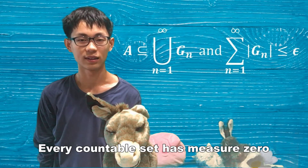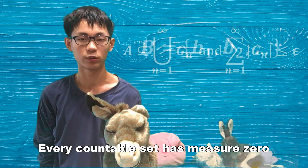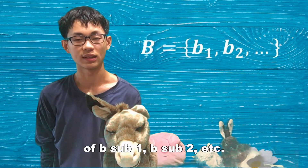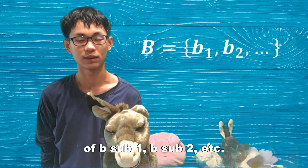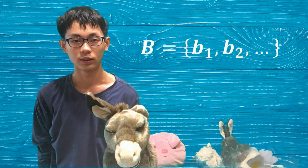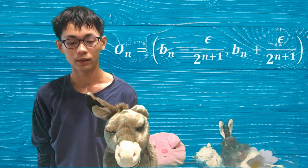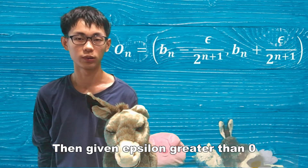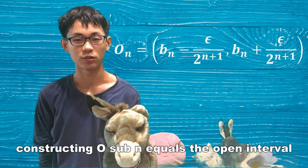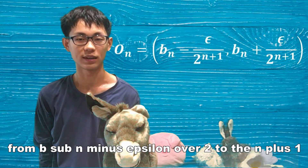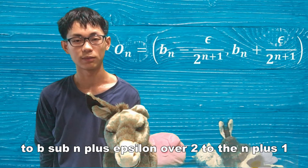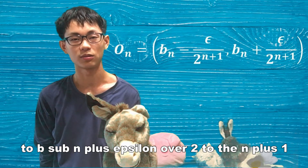Every countable set has measure zero. Let B equal the set {B sub 1, B sub 2, ...} be countable. Then given epsilon greater than zero, construct O sub n as the open interval from B sub n minus epsilon over 2 to the n plus 1, to B sub n plus epsilon over 2 to the n plus 1.